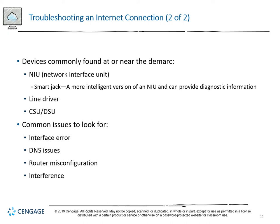Common WAN issues to look for: there might be something connected incorrectly or spliced wrong at the interface. There's a problem with DNS - an actual problem with the domain name server. The router is completely misconfigured. Or you may see interference from nearby equipment causing operational problems.